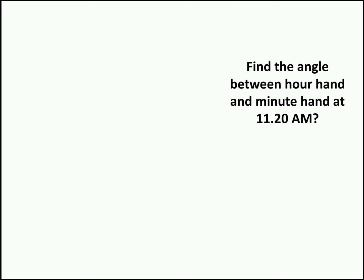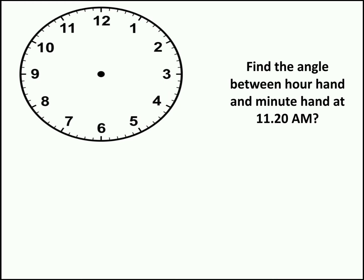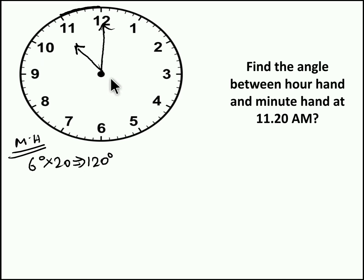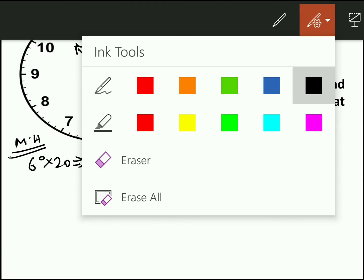Moving to the second question: find the angle between the hour hand and minute hand at 11:20 AM. We keep 11 AM as the base. At 11 AM, the minute hand points to 12 and the hour hand points to 11. The angle between them is 30 degrees — a single subdivision. At 11:20 AM the minute needle moves 6 degrees per minute, so in 20 minutes it moves 120 degrees, meaning the minute hand will be pointing to 4.